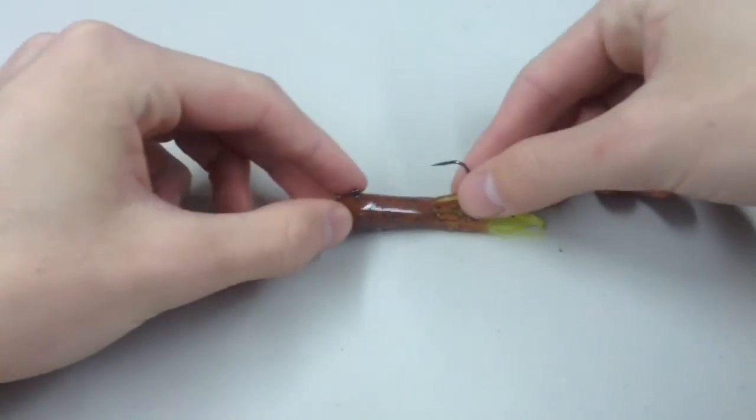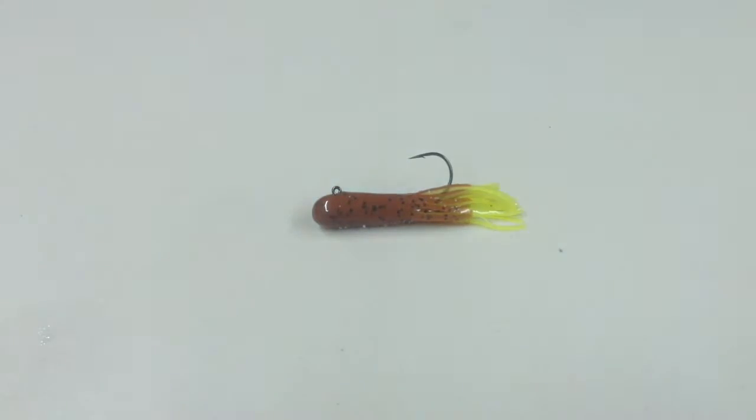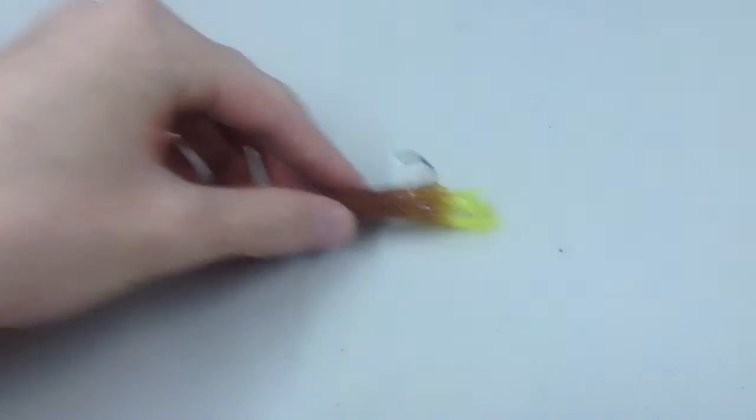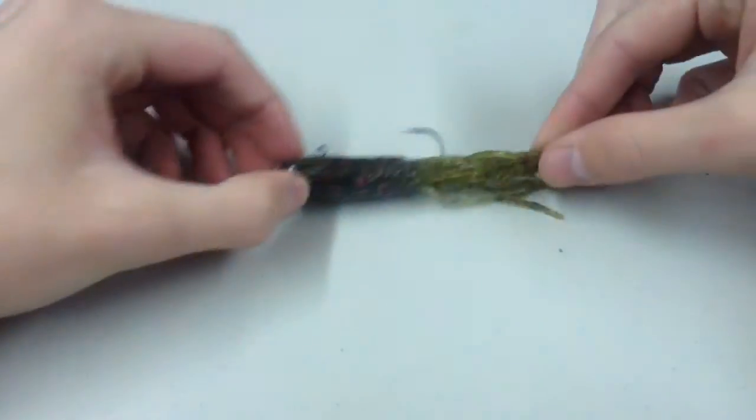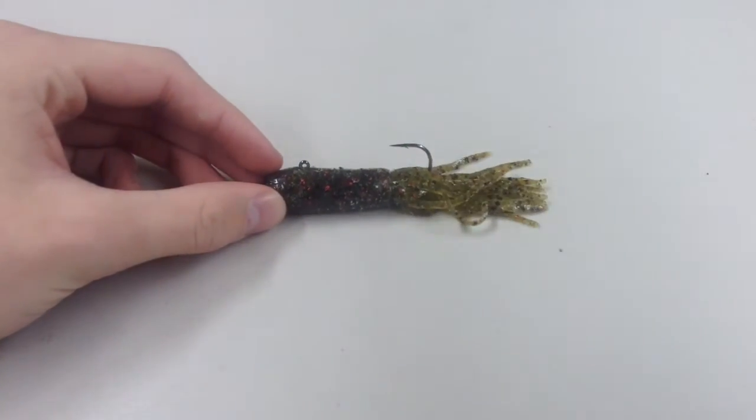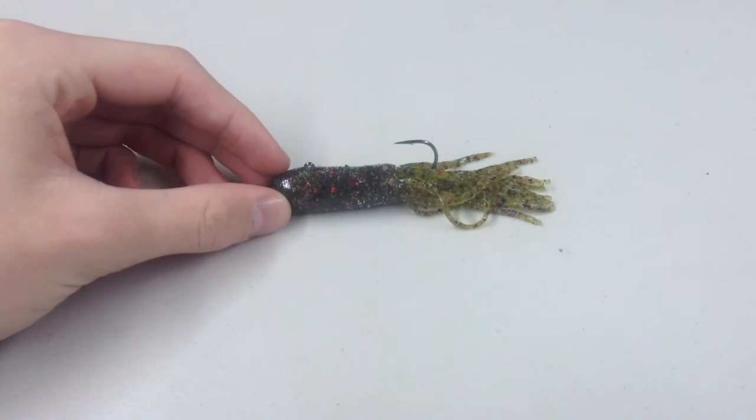So we have, this is a Strike King Bitsy tube. This is what eighth ounce looks like. Fits that really well. I don't have a quarter ounce, but I have a three eighths. That's a Strike King coffee tube. I think that's the three and a half inch model.